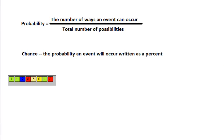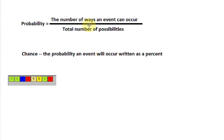Hi there. I want to talk with you today about probability and chance. Probability, as you probably know, is a fraction — it's the number of ways that an event can occur out of the total number of possibilities. Now chance is very much related to probability. It is the probability that an event will occur, but it's written as a percent. To find the difference between those, let's take a look at this example.